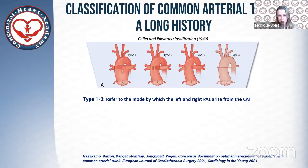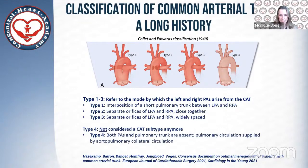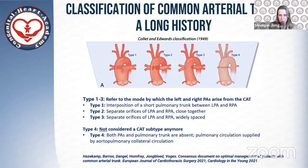We start with the Collett and Edwards classification, developed in 1949, which initially defined four types. Types one to three refer to the mode by which the left and right pulmonary arteries arise from the trunk: type one with a short pulmonary trunk giving rise to the LPA and RPA; type two with separate orifices spaced closely together; and type three where the orifices are widely spaced. Type four we nowadays do not consider a common arterial trunk anymore — that is the case where both pulmonary arteries are absent and pulmonary circulation is supplied completely by aortopulmonary collateral circulation.